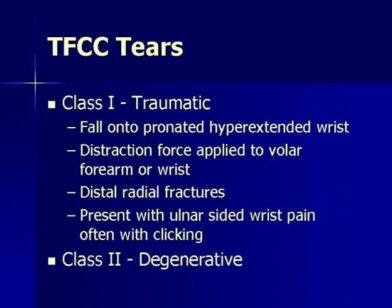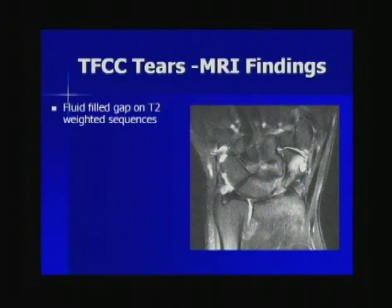Triangular fibrocartilage tears can be broken into two classes. Class 1 is traumatic, often caused by a fall onto a pronated hyperextended wrist. They can be associated with distal radial fractures and often present with ulnar-sided wrist pain and clicking. Class 2 are degenerative tears. On MRI, the most sensitive finding to evaluate the TFCC is a fluid-filled gap on T2-weighted sequences within the disc.